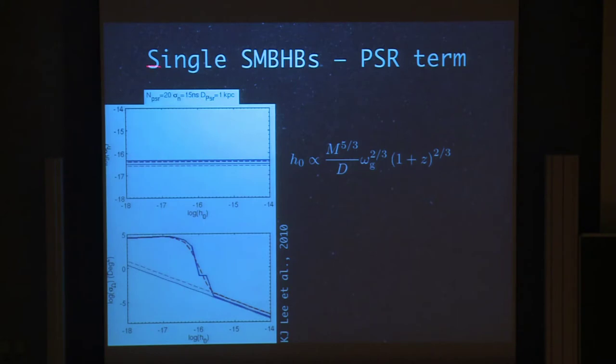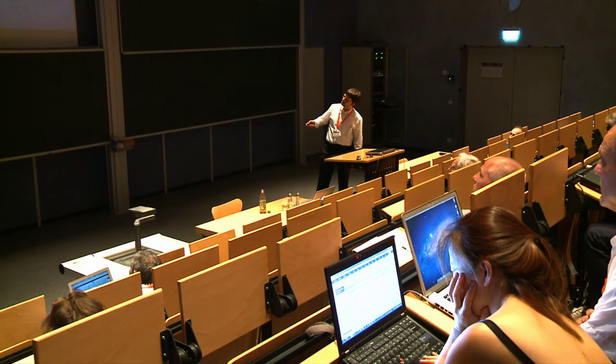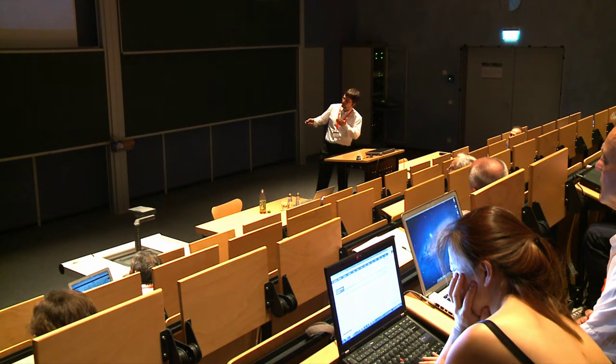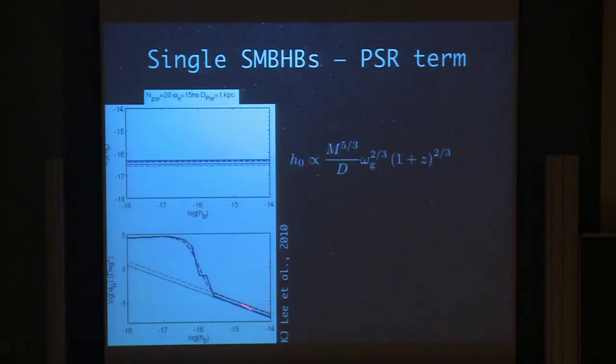This is in a bit more detail, the sensitivity they get. For an assumed pulsar timing array with 20 pulsars, which is a bit on the lower side, we can definitely do more, with a timing precision of 50 nanoseconds, which is a bit optimistic, but for the SKA it may be possible, and an average pulsar distance of about 1 kiloparsec, which is reasonable, they get an amplitude sensitivity of a bit below 10^-16. And this is the source localization on the sky at that amplitude. At smaller amplitudes of course you have no localization because you can't see gravitational waves. At higher amplitudes, the waves that you can detect, you actually get localizations of about 10^-5 or better, so that's definitely less than 1 square degree.